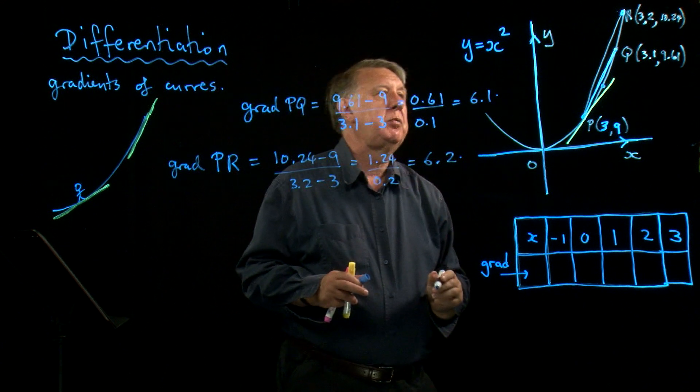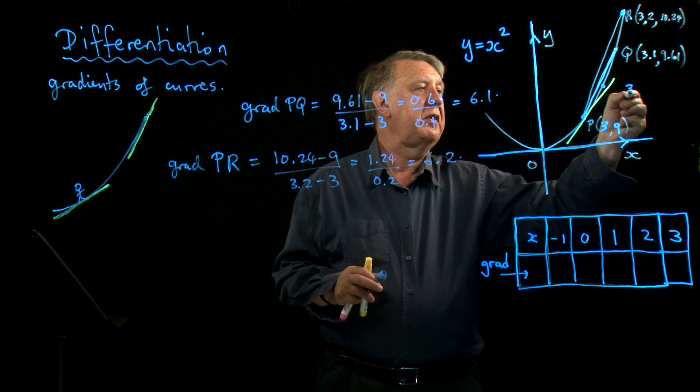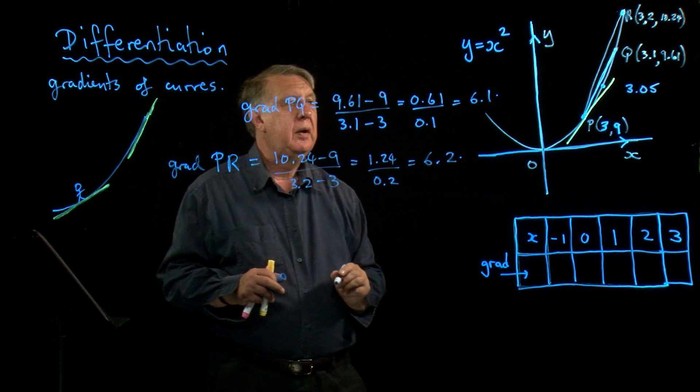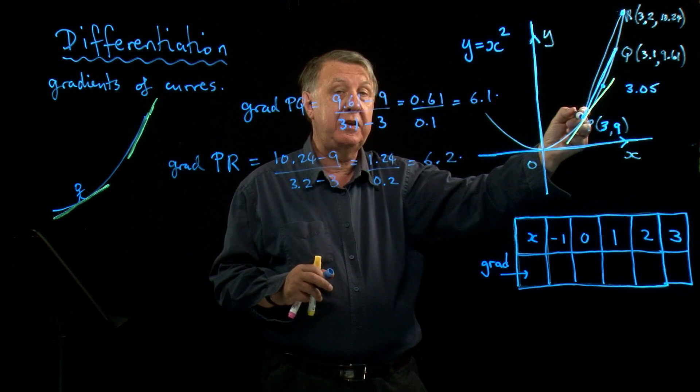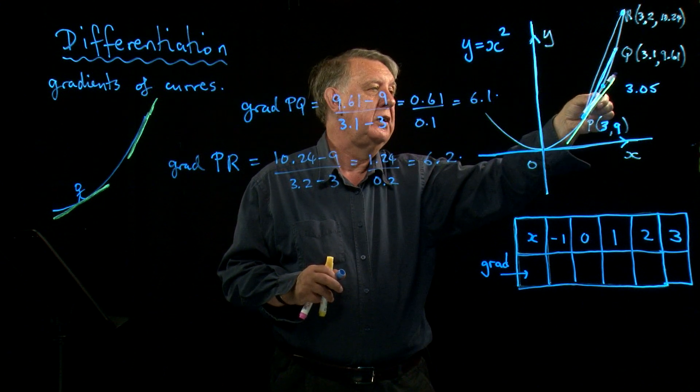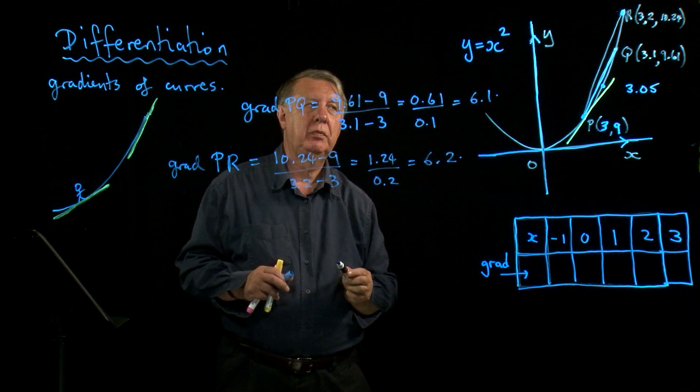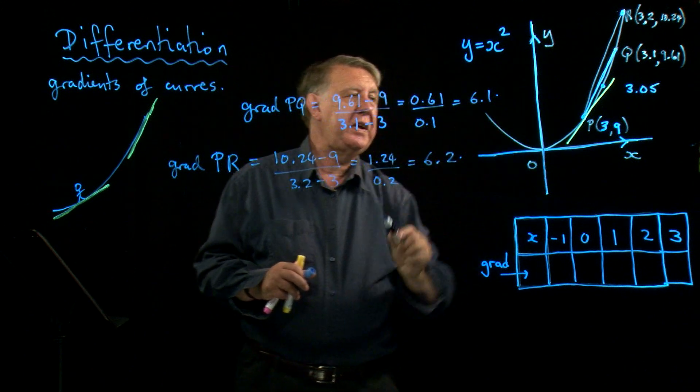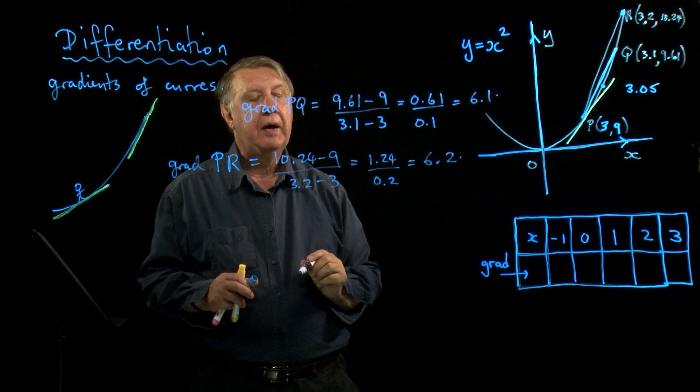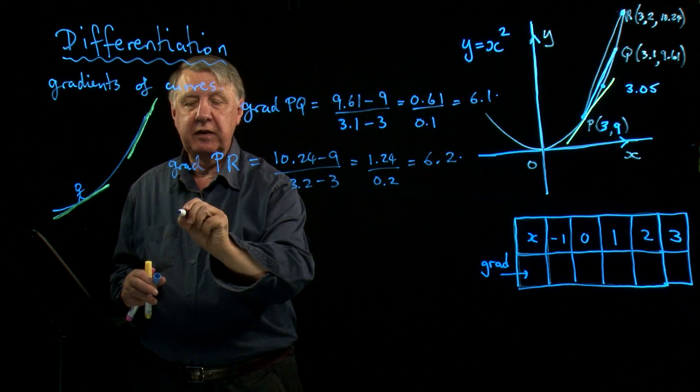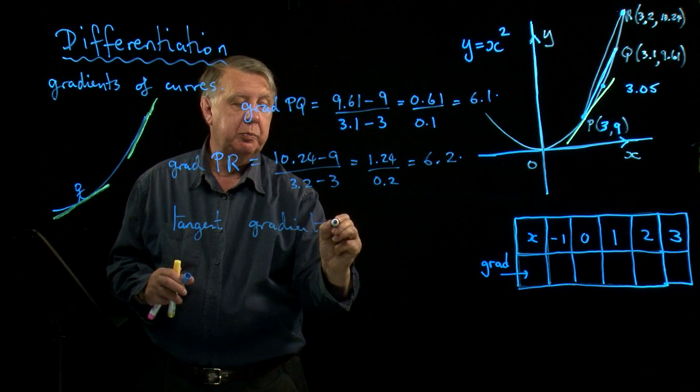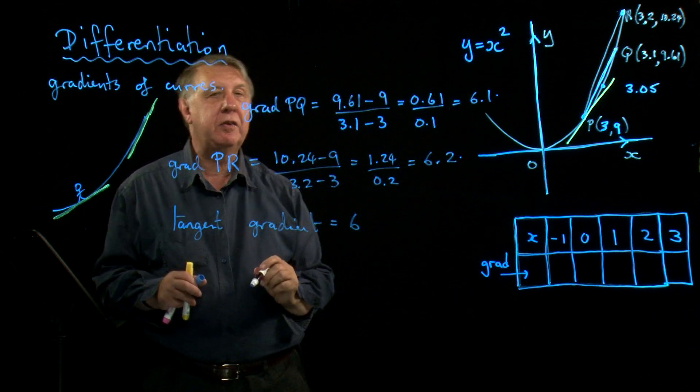Now if you were to do this with another number, nothing to stop you putting in 3.05 as your x value, and you'd get a number a bit less than 6.1. So as this point gets closer and closer to this point, then clearly the straight line is getting closer and closer to the yellow line, which is the tangent. This means then that if I want the slope of the yellow line, I've got to look at what happens to these numbers. And I can safely say that the tangent will have a gradient of 6, because if you keep doing this, you will find these numbers get nearer and nearer to 6.